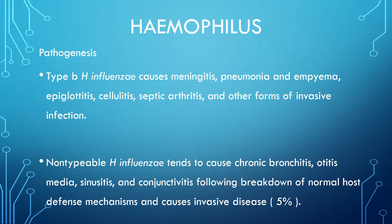Haemophilus influenzae type B causes meningitis, pneumonia, epiglottitis, cellulitis, septic arthritis, and other forms of invasive infection. While non-typable H. influenzae tends to cause chronic bronchitis, otitis media, sinusitis, and conjunctivitis, which usually follows the breakdown of normal host defenses and causes invasive disease in approximately 5% of cases.